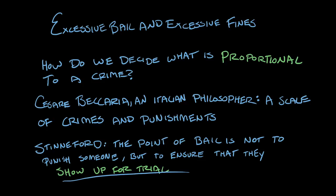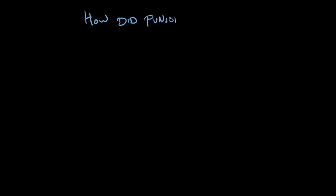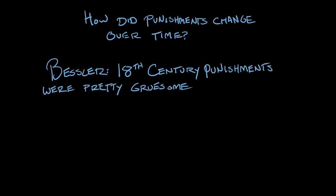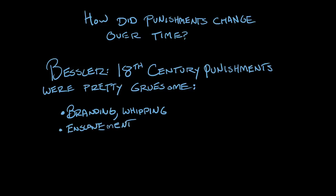What seemed like cruel and unusual punishment in the 18th century might not be what we consider cruel and unusual today — for example, we don't do whipping as a punishment anymore. How has what counts as cruel and unusual punishment changed over time? The law really changes gradually over time. Back in the 18th century, there was actually a large collection of pretty gruesome punishments. They had non-lethal corporal punishments — things like branding people, whipping slaves, and ear cropping, where people would get their ears cut off.